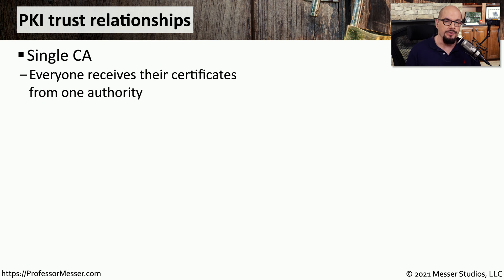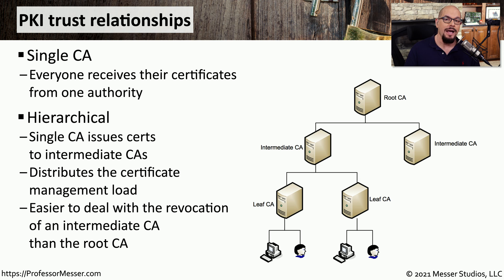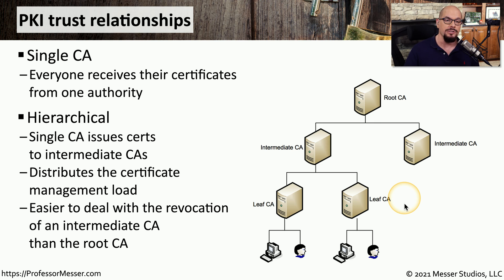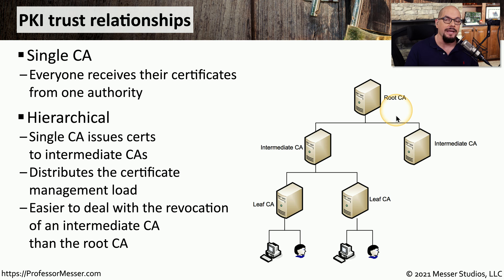In the simplest infrastructure, there is a single certificate authority, and that single CA signs the certificates for everyone in the organization. But in most organizations, there is a hierarchy of certificate authorities. You can have a root CA, there might be intermediate CAs just underneath, and underneath an intermediate CA would be what we call a leaf CA. This distributes the load of managing the certificates across multiple CAs. This also makes it easier if a particular certificate authority is compromised and you need to revoke all of the certificates that that CA signed — you can remove one of those leaf CAs, and the intermediate and root CA would still remain valid.